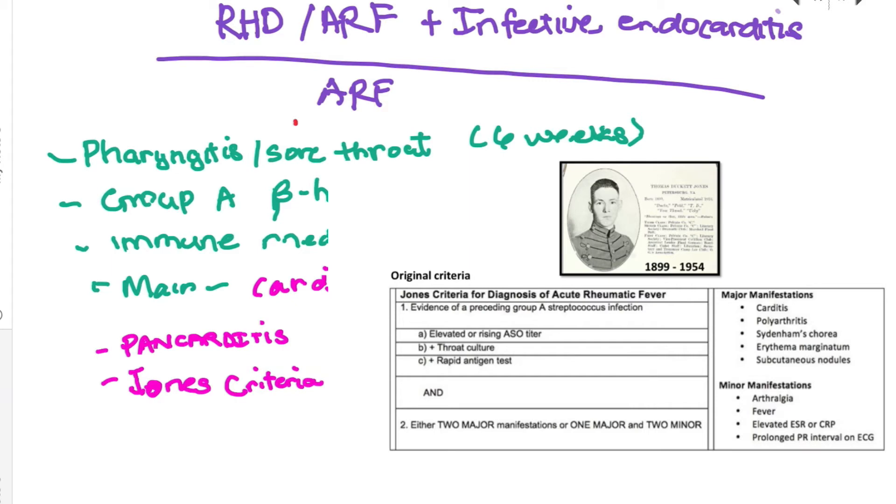In terms of the criteria, a patient must have the presence of the Group A streptococcus organism. They can do a titer, throat culture, or antigen testing. There are major manifestations and minor manifestations according to the Jones criteria. To diagnose the patient, they must have the organism and two major symptoms or one major and two minor. I'll be inserting a photo here so you can pause the video and look at that on your own time.